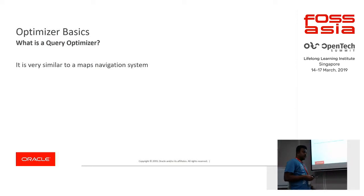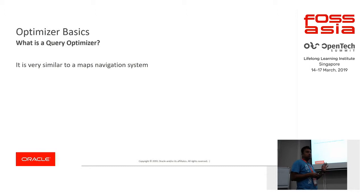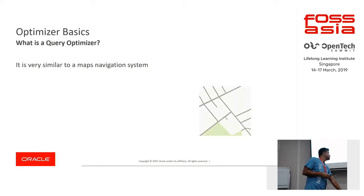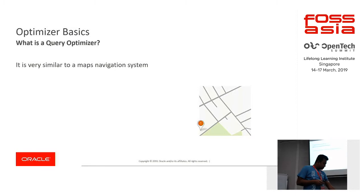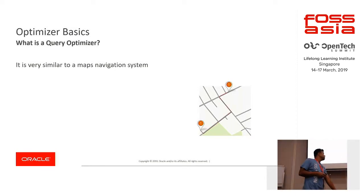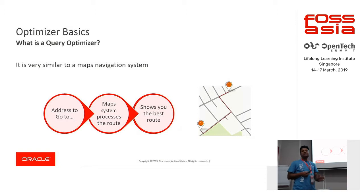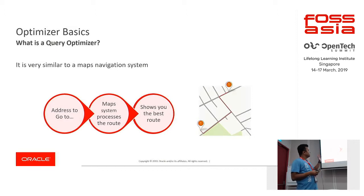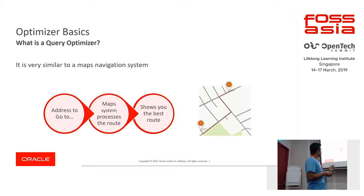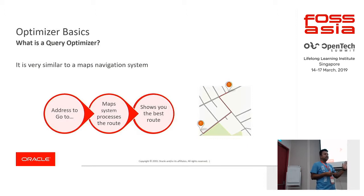I took this example from one of the blogs of Marvin Talker. He explains the optimizer as a map navigation system. You have a source, you have a destination, and you want to reach your destination in the best possible way. This is similar to what the optimizer does in MyScale — it finds out the best possible way to execute your query.